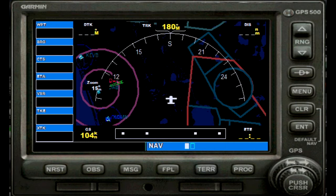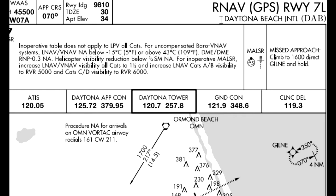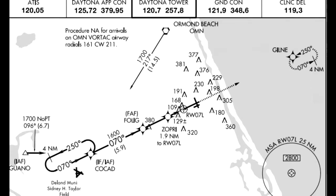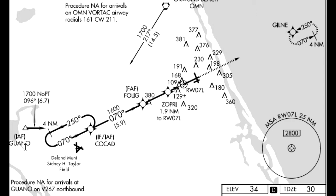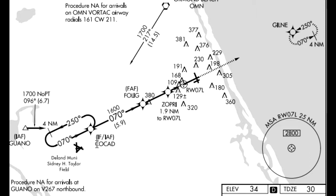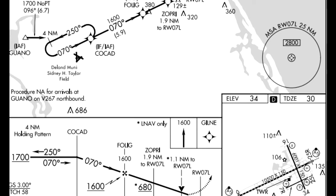I will show you the approach plate quickly here. RNAV GPS 100/7F — as you can see in the plan view, this is the approach. We have different initial approach fixes: one would be Guano intersection. COCAT is also an initial approach fix as well as an intermediate fix. And we have Folog as our final approach fix. The dashed line represents the missed approach procedure. The approach starts at 1700, which is the altitude we have to hold until we get to COCAT. The final approach fix is marked with a star. This is a NACO chart.